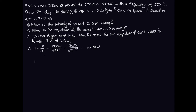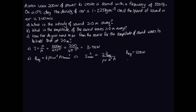For Part B, we want the amplitude of the sound waves two meters away. We use: P_average = ½ρvω²A·s_max². Rearranging, s_max² equals 2·P_average over ρvω²A. The average power is 200 watts, and the area is the area of the wave front, which is 4πr² = 4π times 2² = 16π.